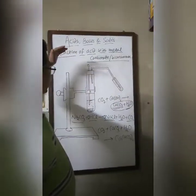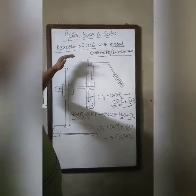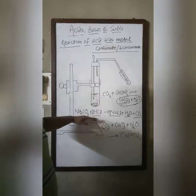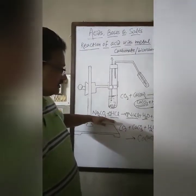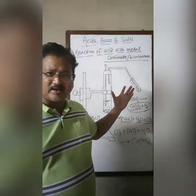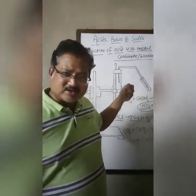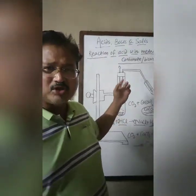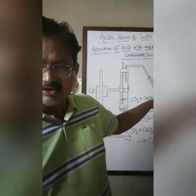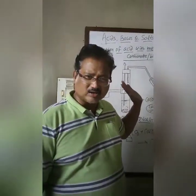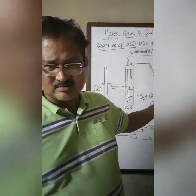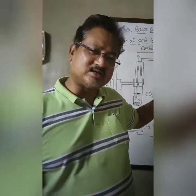Whenever an acid reacts with a metal carbonate or bicarbonate, brisk effervescence occurs. The observation is that brisk effervescence occurs with the evolution of a colorless, odorless gas which turns lime water milky. On passing the gas in excess, the milkiness disappears.